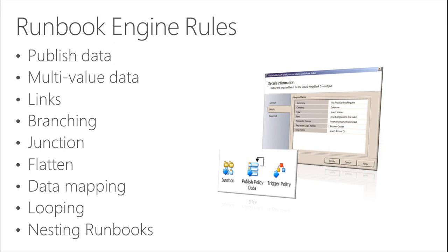The last concept is nesting runbooks. You can start runbooks within a runbook, creating a parent-child relationship. A good example is the error-handling idea — you have a dedicated runbook for error handling and call it from all your other runbooks. You do this with the invoke runbook activity, where you can define parameters to pass to the child runbook and also return values from the child runbook back to the parent.